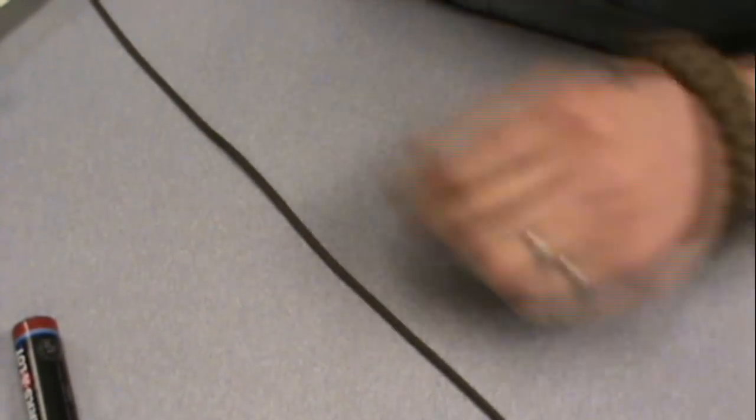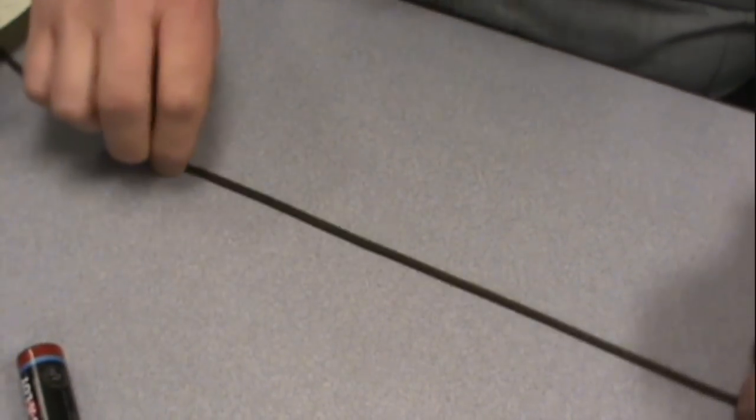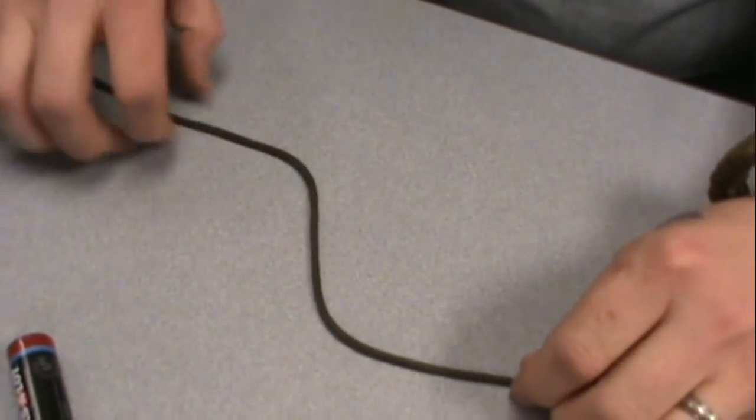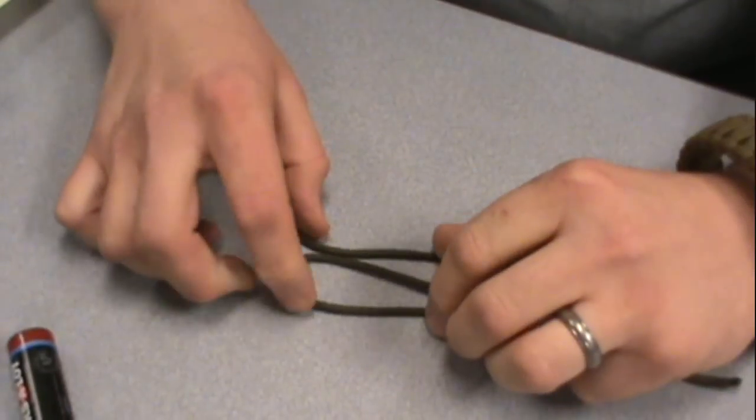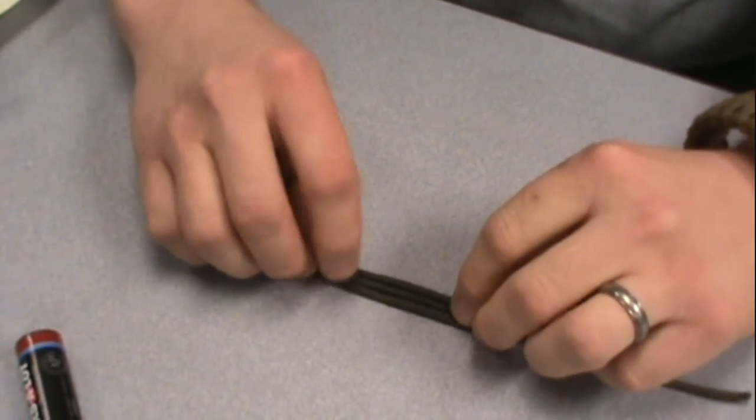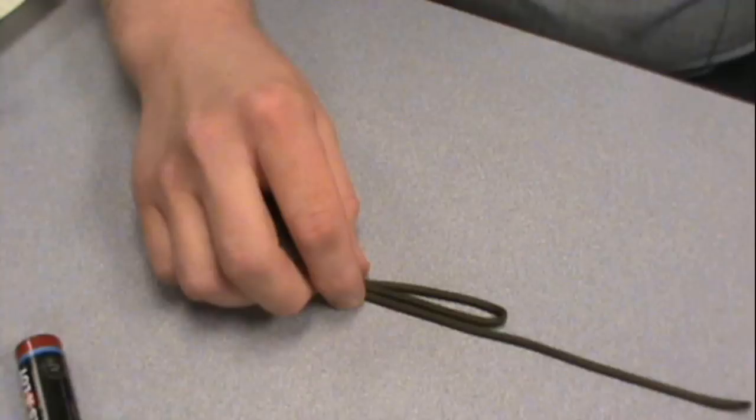The first one we're going to go over is the sheep shank. I'm going to try to do this to where you can see it. Now what you're going to do is bend your cord over in a Z shape and then kind of get it like that.